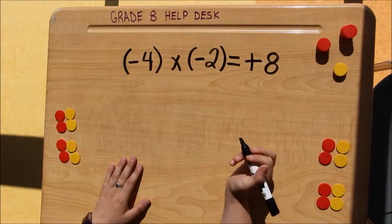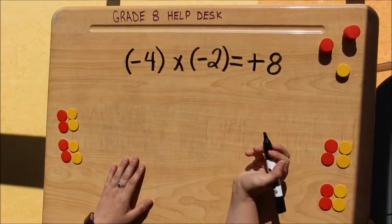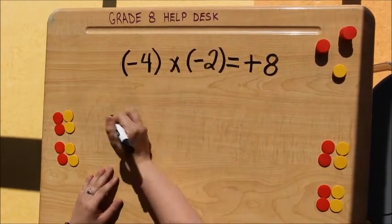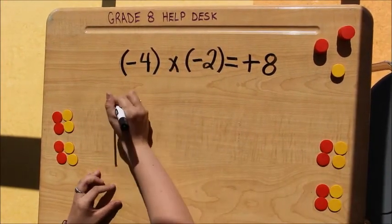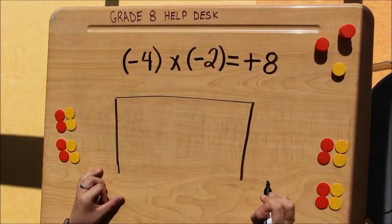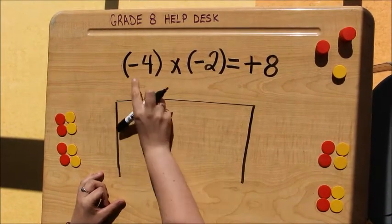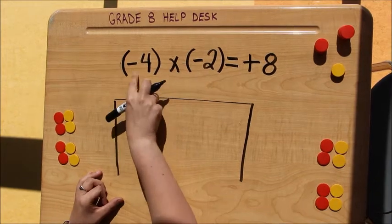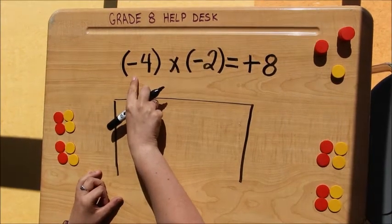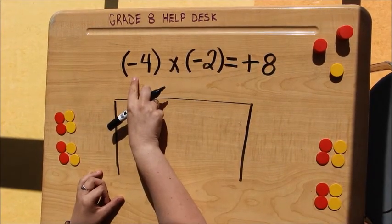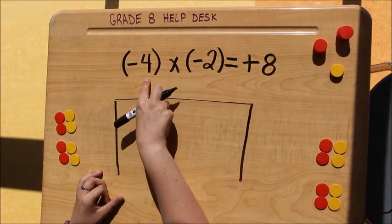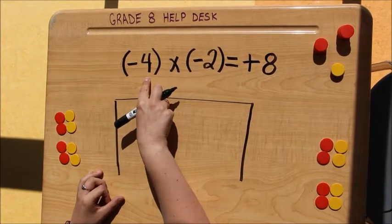To check this math I'm going to use integer tiles to make sure my answer is right. I'm going to start off by drawing a bank. If I look at my first sign, it is a negative, which means I am taking something out of my bank. And I'm going to be taking 4 groups of something out.